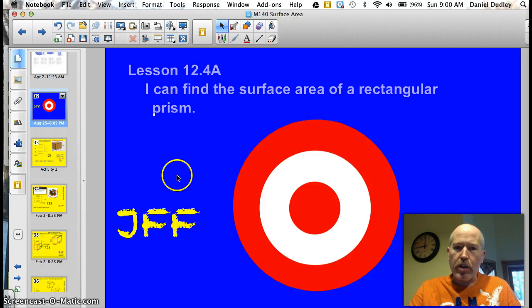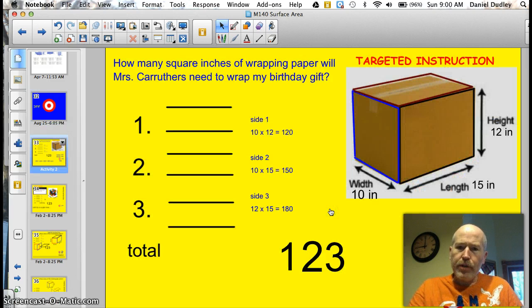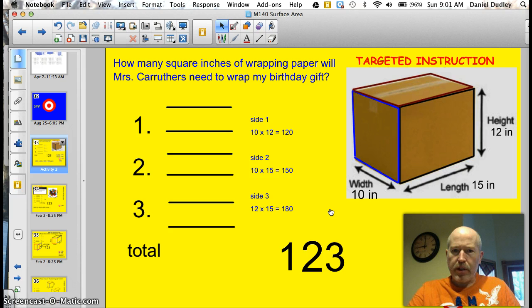Tonight's official target is 12.4a. I can find the surface area of a rectangular prism. Surface area confuses a lot of kids but really it's as easy as one two three. Let's take a look at this box here. This is Mrs. Crothers birthday gift for me and she wants to know how many square inches of wrapping paper will it take her to wrap this.